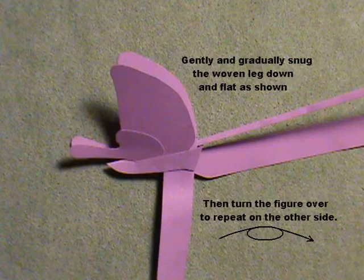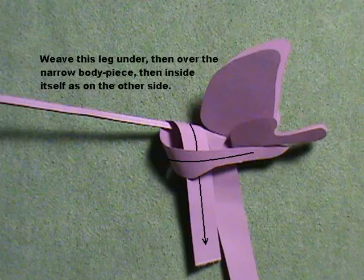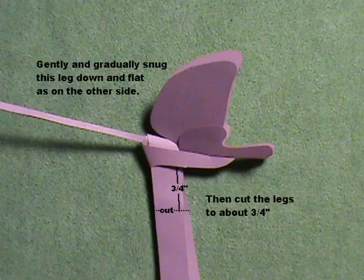Then turn the figure over to repeat on the other side. Weave this leg under, then over the narrow body piece, then inside itself as on the other side. Gently and gradually snug this leg down and flat as on the other side.